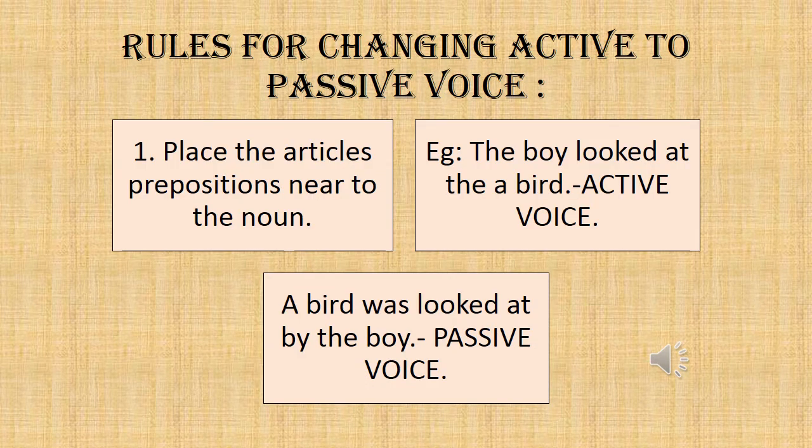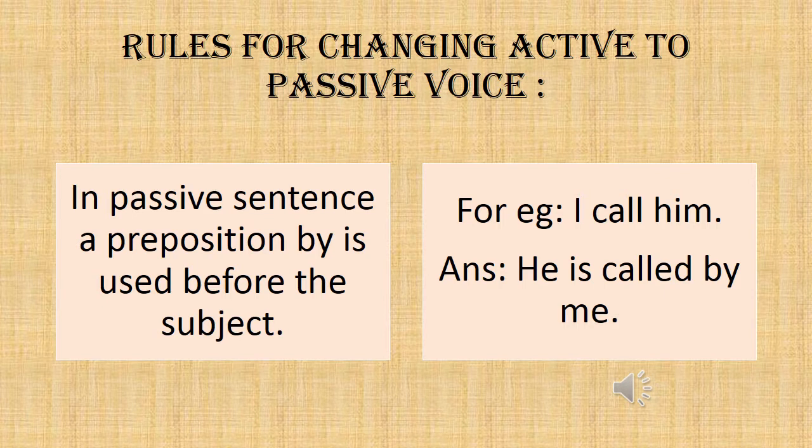Place the articles and prepositions near to the noun. For example, 'the boy looked at the bird' is active voice. The passive voice answer will be 'a bird was looked at by the boy.' In a passive sentence, the preposition 'by' is used before the subject. For example, 'I call him.' The answer will be 'he is called by me.' Here, 'by' is used before 'me.'